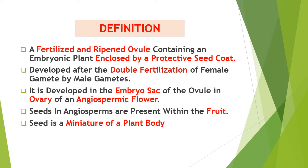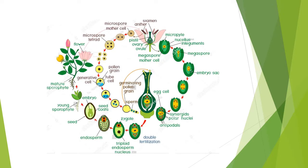Before we understand the structure of the seed, we need to understand how it is developed. This can be seen with a simple diagram which covers the life cycle of an angiosperm. As a student of science, you are well versed with the structure of a flower — the flower which is the end of the vegetative phase and the beginning of a reproductive phase.